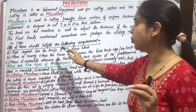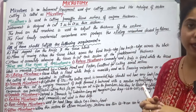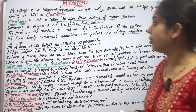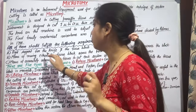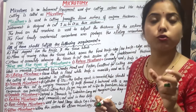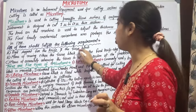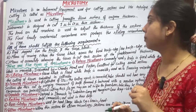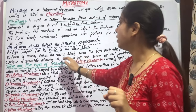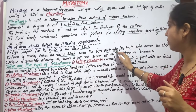All microtomes should fulfill the following requirements. The microtome should have rigid support for the knife and the tissue, so that it can cut the tissue block properly. There must also be means of moving either the tissue block or rotating it across the fixed knife edge.